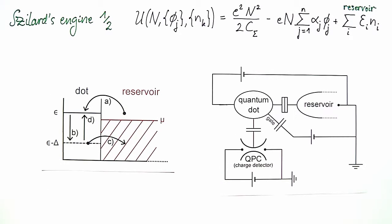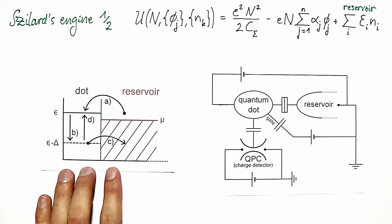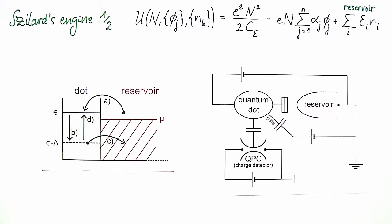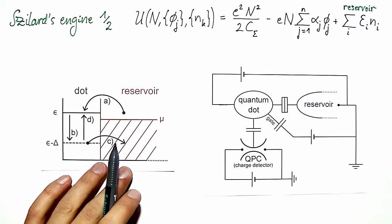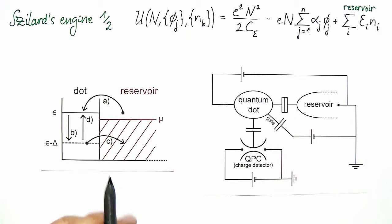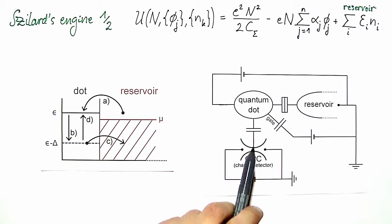In this exercise we study a realization of Szilard's engine in a system consisting of a quantum dot tunnel coupled to an electron reservoir and capacitively coupled to a point contact which we can use as a charge detector. The quantum dot is provided with one or multiple gates which we can use to tune the energy of the single dot level that we consider. We will show that we can extract heat from the reservoir in thermal equilibrium and convert it to work, provided information about the state — the occupation of the quantum dot.